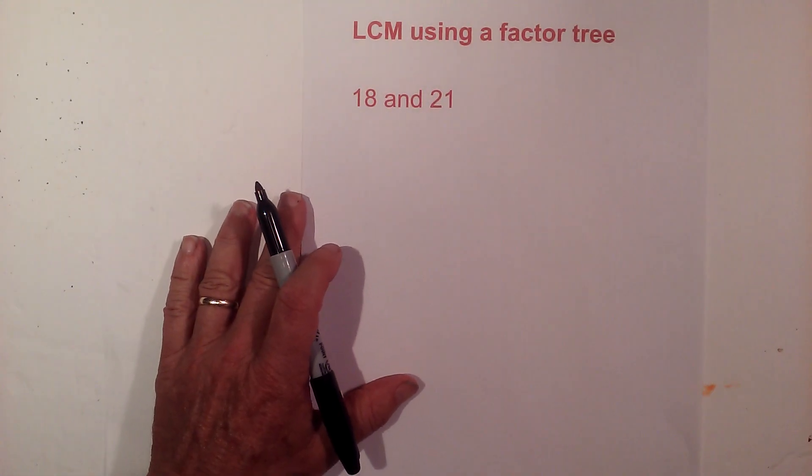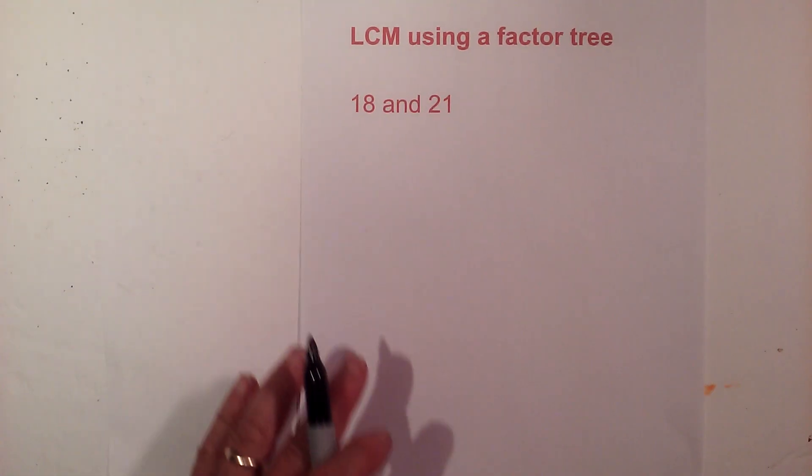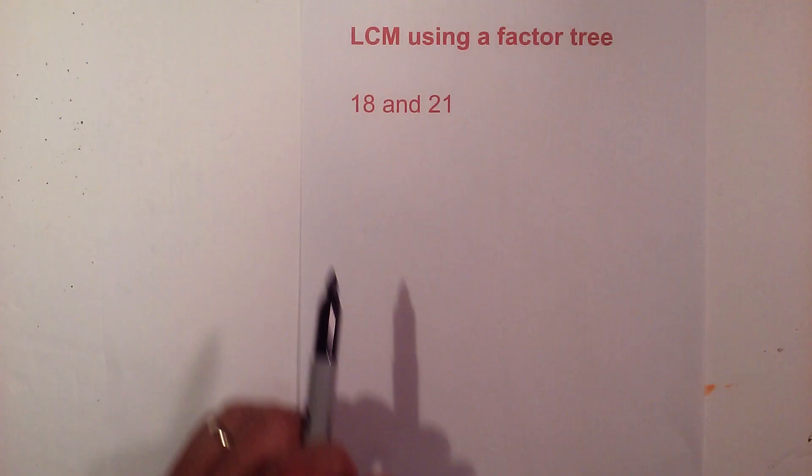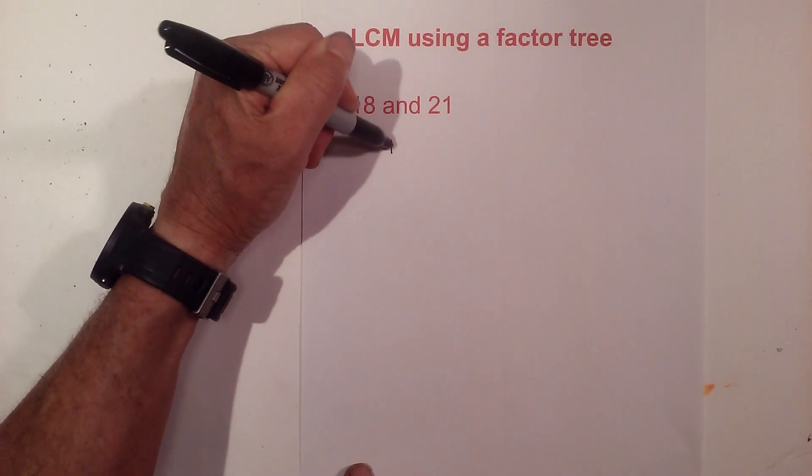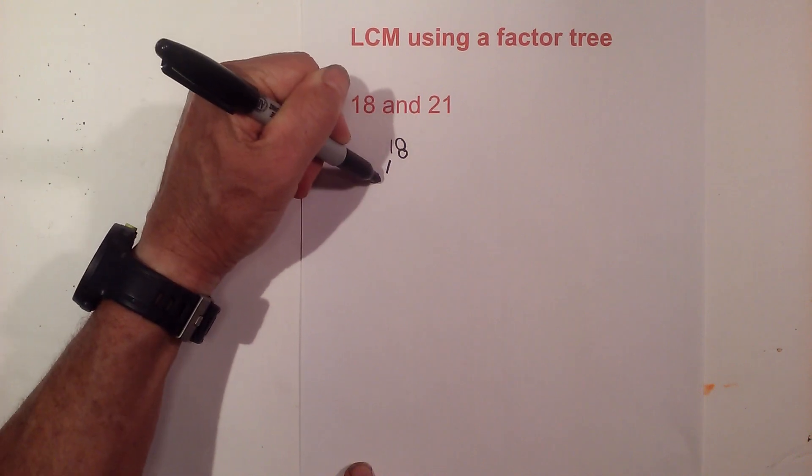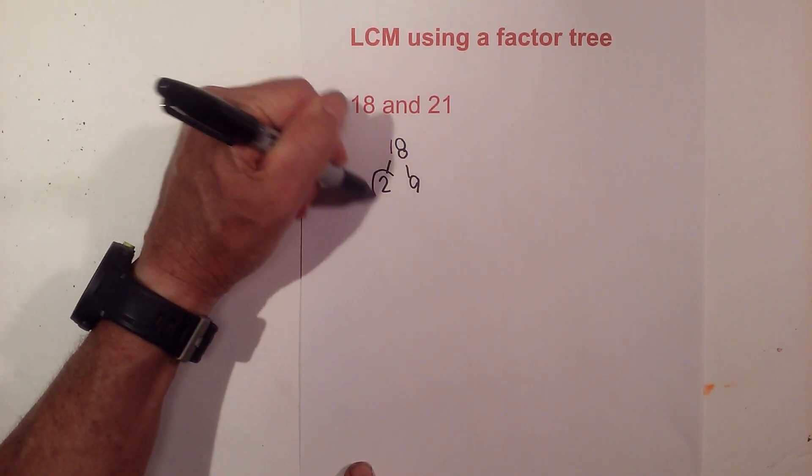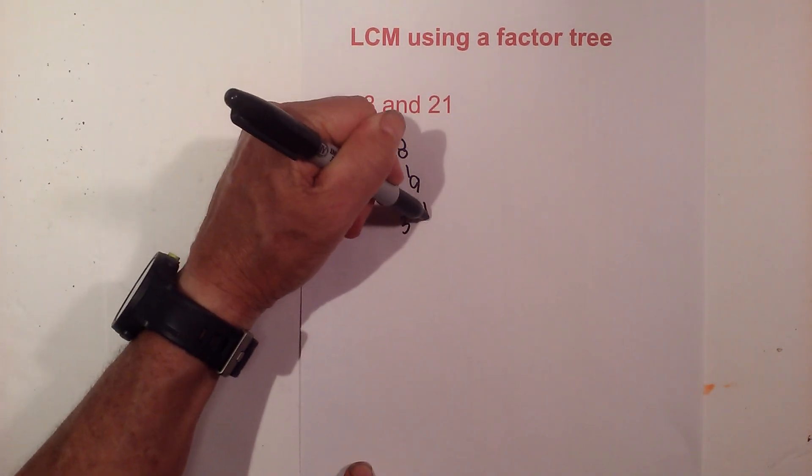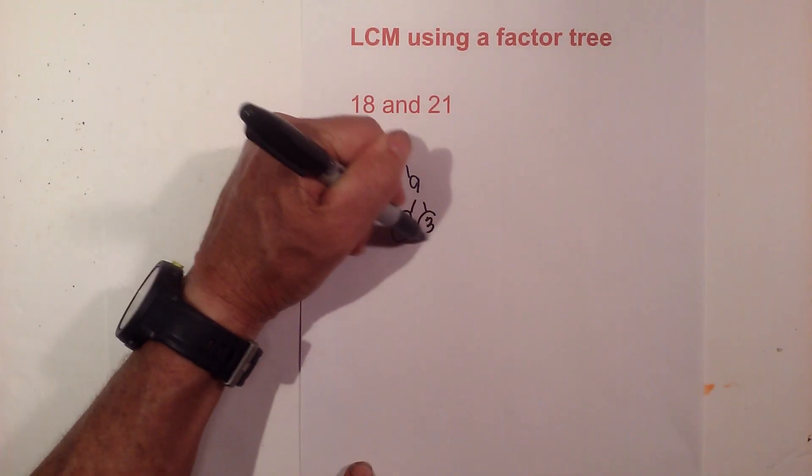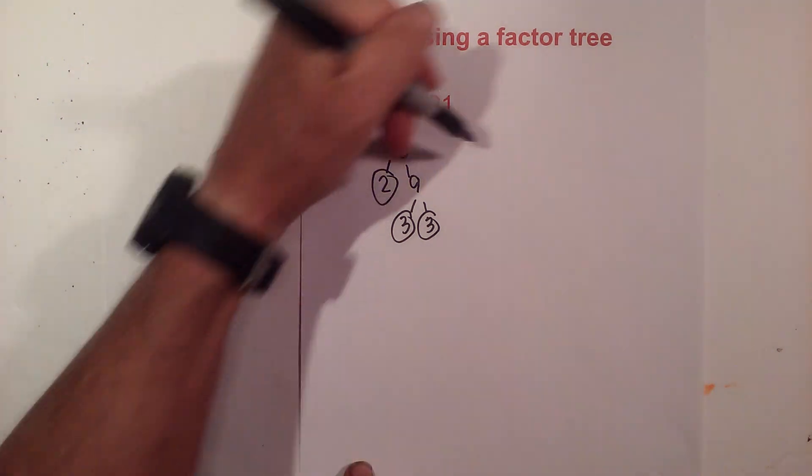In this video let's find the LCM or the least common multiple of 18 and 21. I like to use a factor tree, so let's get started. Let's first create a factor tree for 18: 2 times 9 equals 18. Circle the 2, and then 3 times 3 equals 9. I'm now down to prime numbers so I'm finished.